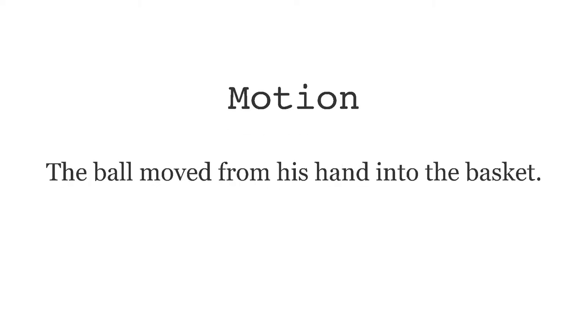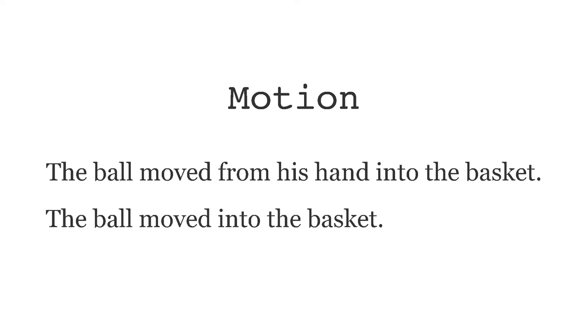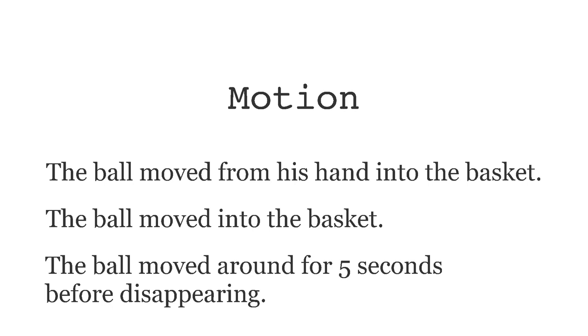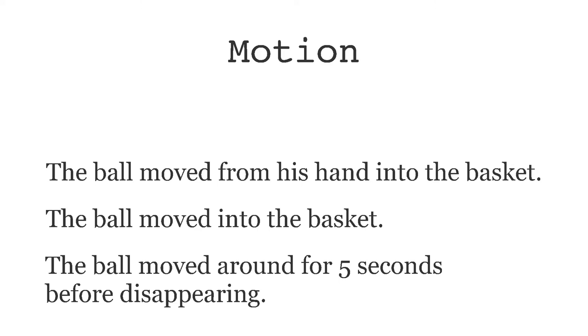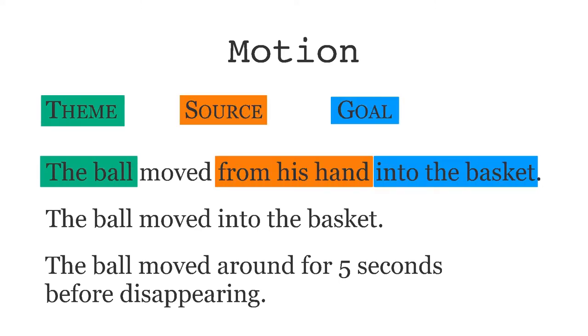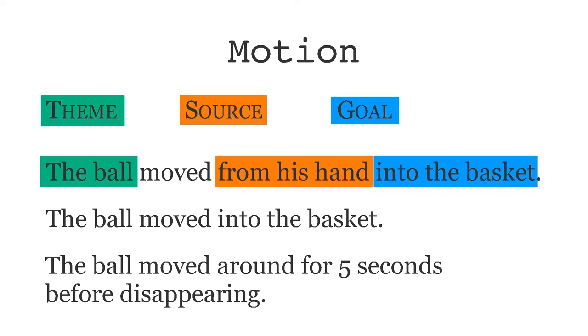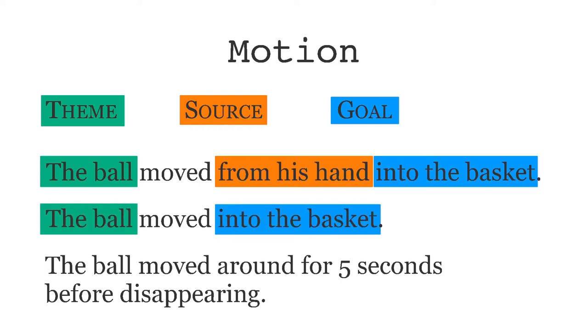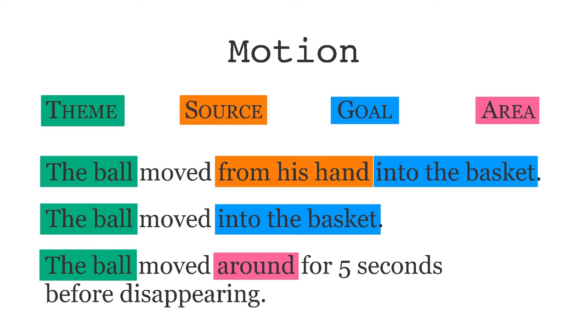Let's take the motion frame as an example. Look at these sentences. The ball moved from his hand into the basket. The ball moved into the basket. The ball moved around for 5 seconds before disappearing. In the first case, the frame elements theme, source, and goal are present. In the second, only theme and goal are mentioned. The last sentence mentions the theme and the area where the motion happened.